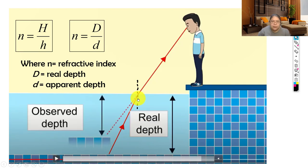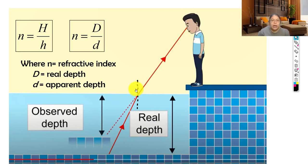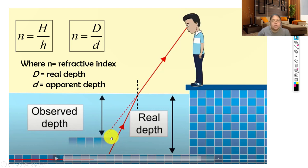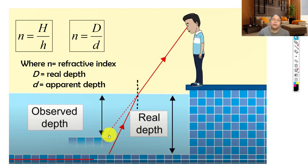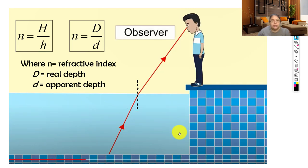Extend the rays back until they go downward - where they meet gives the apparent depth. The real depth is deeper. With two arrows, if they overlap they show the image position; if only one line is used they cannot touch at the same point. The image appears a little higher - just draw slightly above the original position. Label the apparent depth and the real depth accordingly.